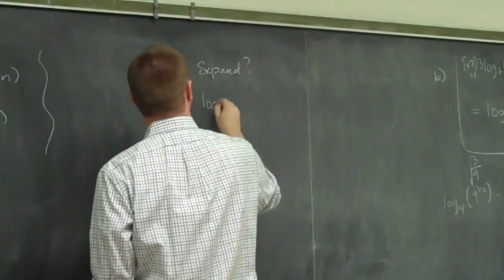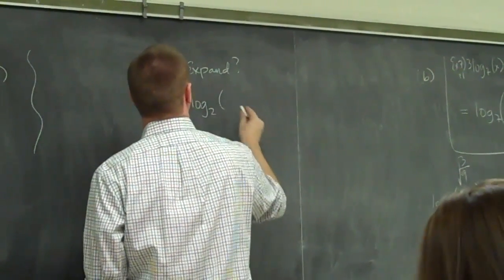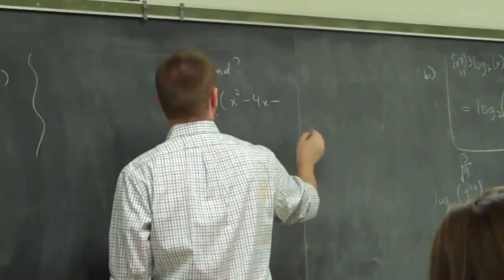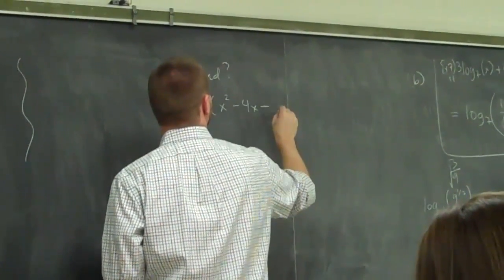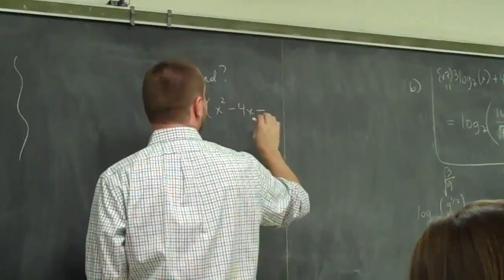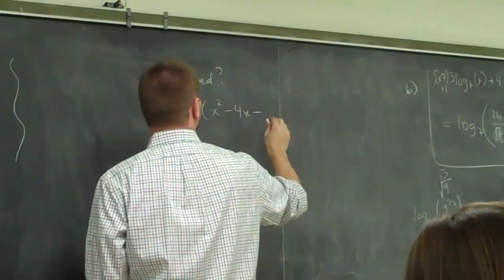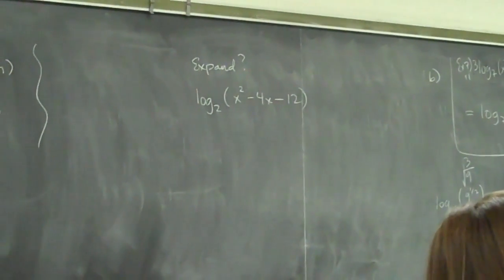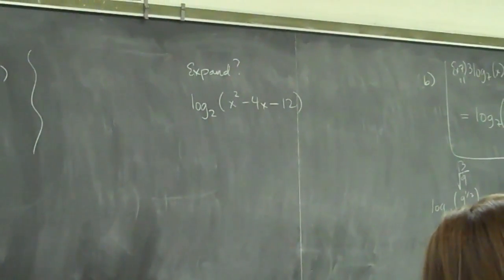To expand the log base 2 of x squared minus 4x minus 12, is it possible to expand that out some way?